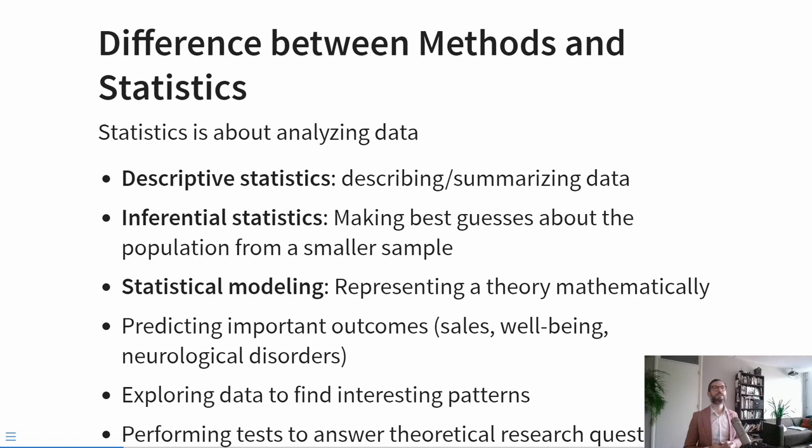There are different subfields of statistics. Descriptive statistics are about describing the characteristics of a limited sample of participants. Inferential statistics is about how you can draw conclusions about an unobserved population based on a limited observed sample. Statistical modeling is about the relationship between theory and mathematical representations of that theory. Statistics also deals with predicting important outcomes — for example, how many resources to purchase or what your projected sales figures are — and with exploring data to find interesting patterns, such as what kind of people are most drawn to particular majors. And statistics are about performing tests to answer theory-driven research questions.